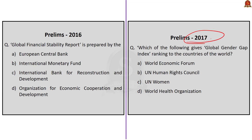First, the 2016 question: Global Financial Stability Report is prepared by — A. European Central Bank, B. International Monetary Fund, C. International Bank for Reconstruction and Development, D. Organization for Economic Cooperation and Development. The correct answer is option B, International Monetary Fund. The IMF publishes a report called the Global Financial Stability Report.